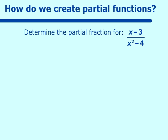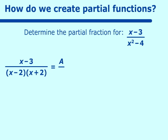Suppose we have x minus 3 over x squared minus 4 and we want to create simpler fractions. We set up x minus 3 over x squared minus 4 equal to a over a factoring of x squared minus 4. That factors as x minus 2 times x plus 2, so we put a over x minus 2 and b over x plus 2, giving us the lowest common denominator.